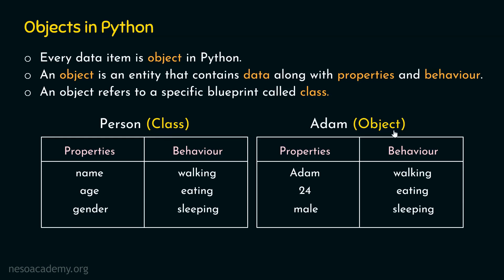An object not only consists of a value, but it also contains the properties and behavior associated with that value. A class is just a blueprint which every object of that class needs to follow. In this example, Adam is the name of a person. Hence, this object needs to follow the generic class person, which has properties name, age, gender along with behaviors walking, eating, and sleeping. We will understand objects in greater detail later, but for now this is enough to understand the concept of variables in Python.